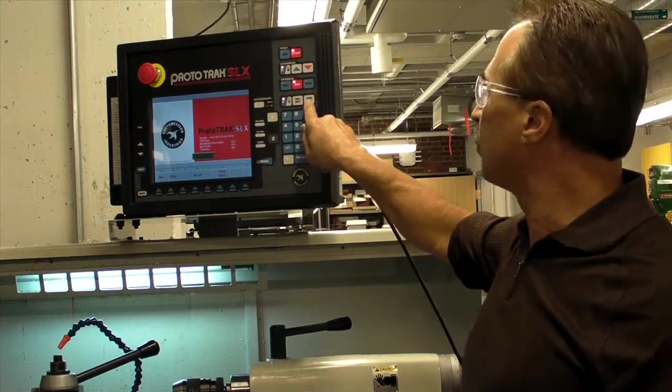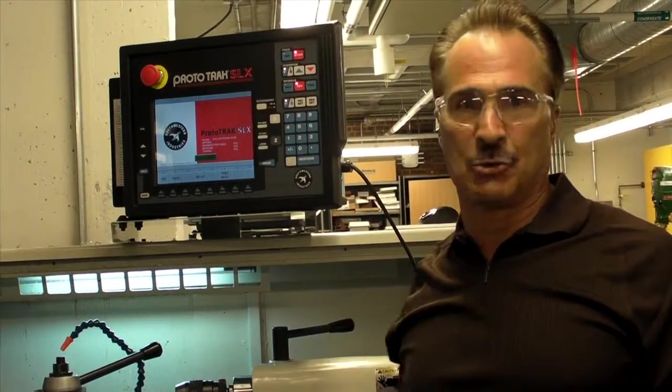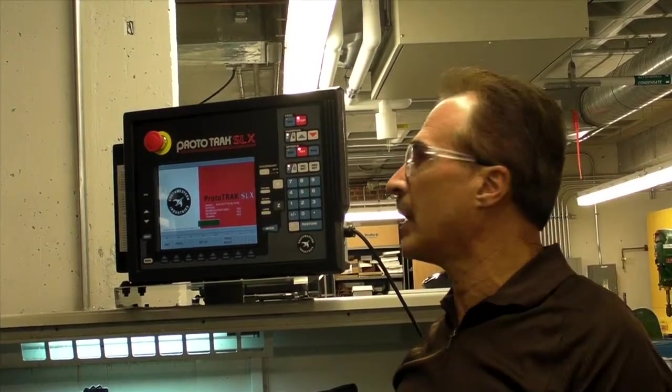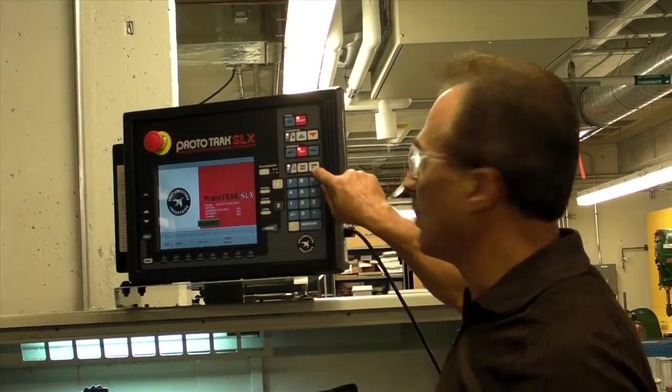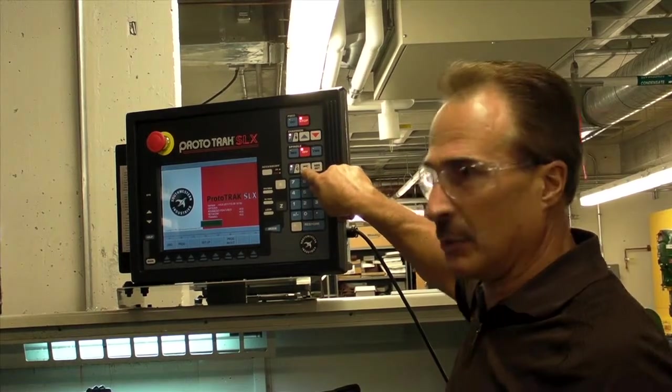Incremental and absolute set. Primarily you're going to use the absolute set key as your main entry key. There will be some sequences when they'll give you an alternative: if you want this feature, enter it with an absolute; versus if you want to select a different feature, enter it with an incremental. So you'll have to kind of watch for that.